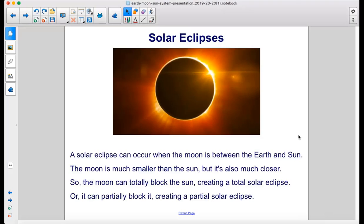A solar eclipse can occur when the moon is between the earth and sun. The moon is much smaller than the sun, but it's also much closer.